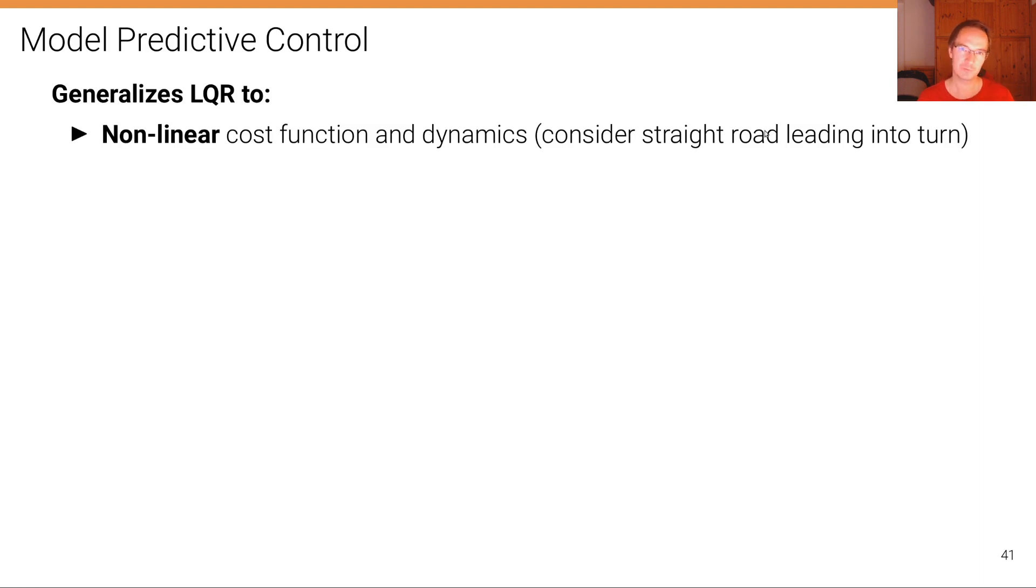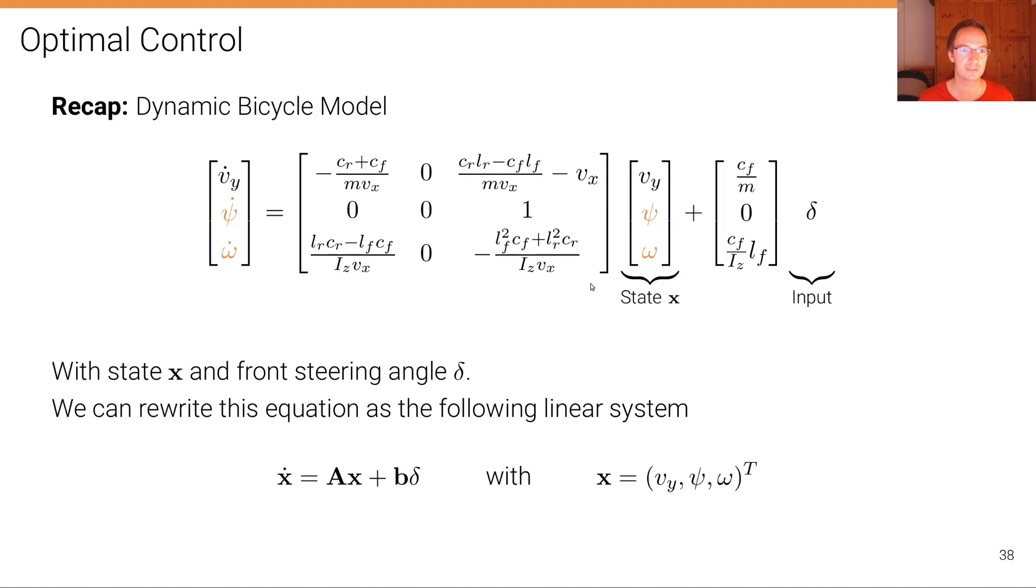Model predictive control generalizes LQR to nonlinear cost functions and dynamics, which is great because we can consider straight roads leading into turns and other nonlinearities.